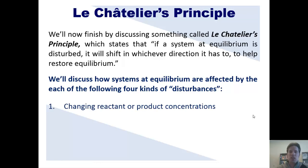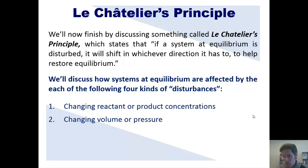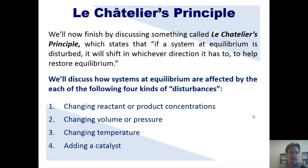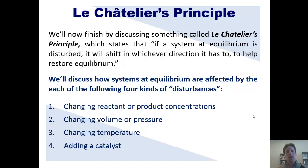First, by changing the reactant or product concentrations. Second, by changing the volume or pressure. Third, by changing temperature. And fourth, by adding a catalyst. We're now going to examine how each of these different things disturbs a reaction at equilibrium, and how Le Chatelier's Principle allows that reaction to compensate or respond to that disturbance.